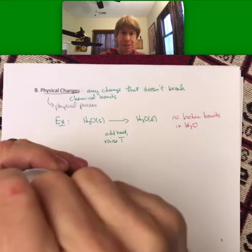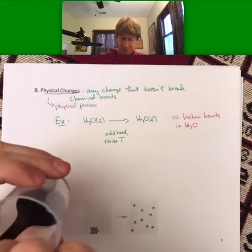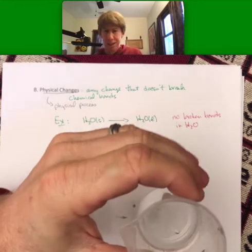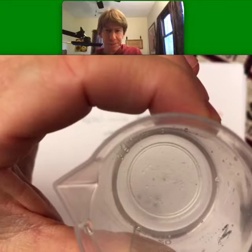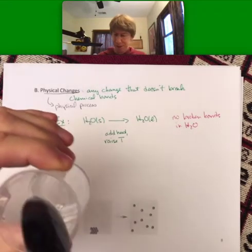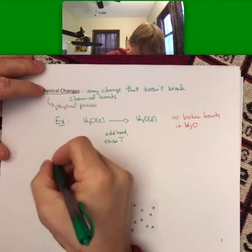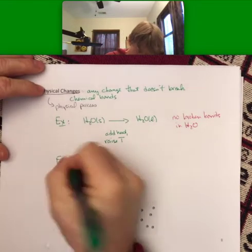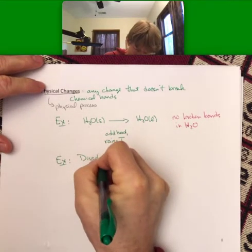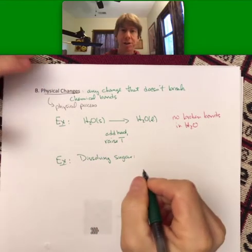Let's check in on our sugar now, because a physical process is going to be dissolving sugar. Is there any solid in there? I think there's a couple bubbles which is weird but no actual solid. So another example of a physical process is going to be dissolving sugar.